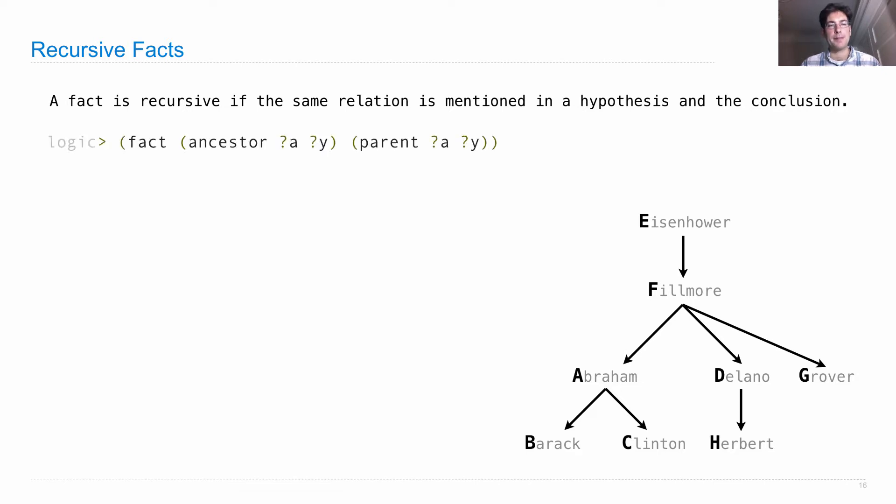I can write, for instance, facts. There's an ancestor relation between some A and some Y if there's a parent relation between A and Y. And then I write another fact. There's also an ancestor relation between A and Y if there's a parent relation between A and Z and an ancestor relation between Z and Y.